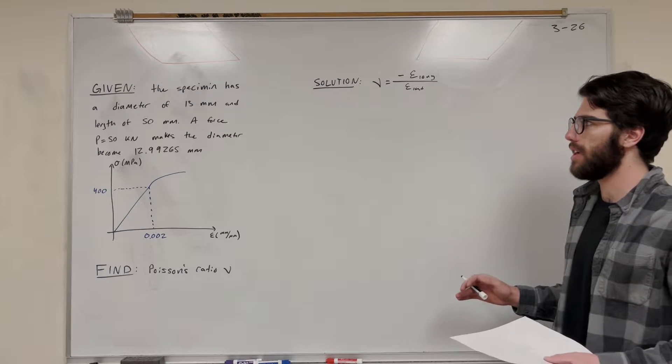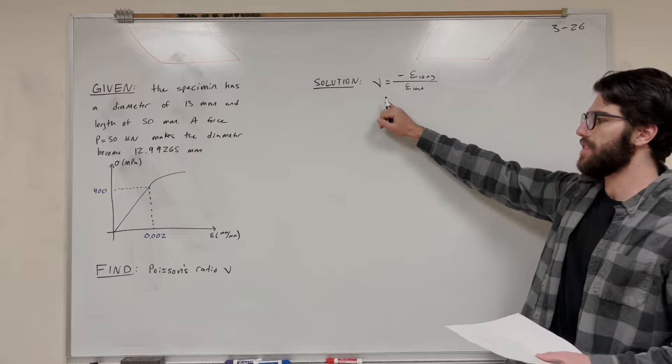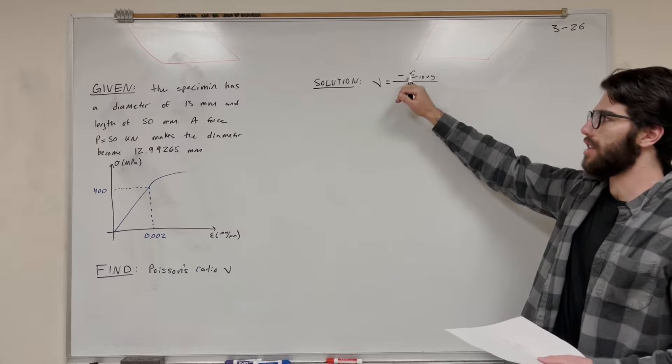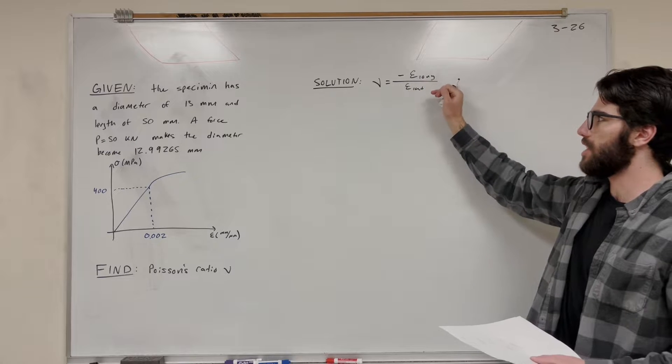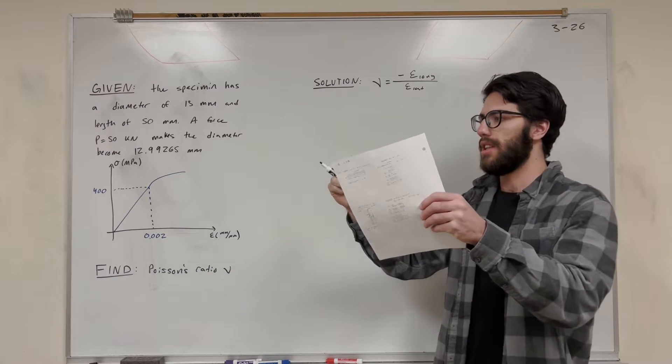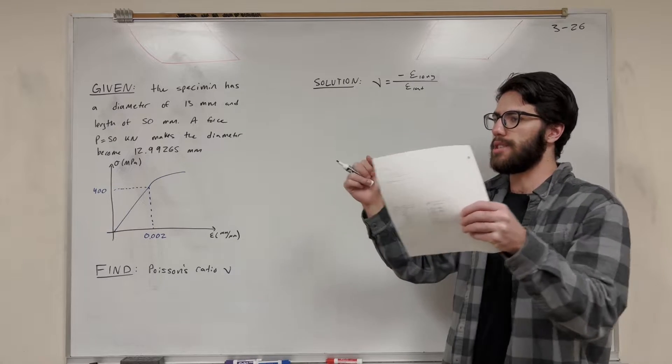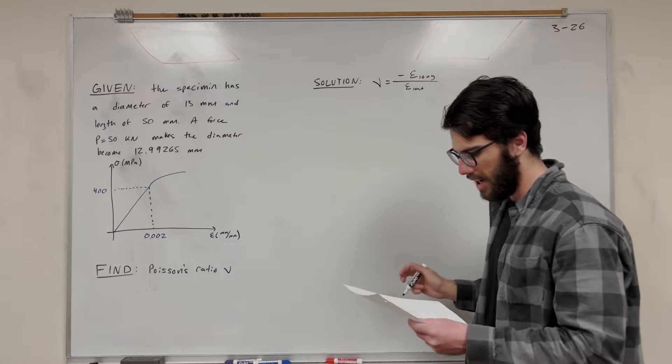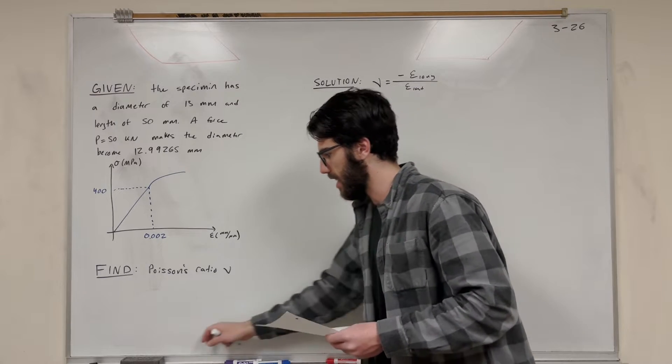So let's just get started with it. So our equation for Poisson's ratio is Poisson's ratio is equal to the strain in the long direction over the strain in the lateral direction. So that means if you have a specimen, the strain in the long direction is how much it expands or contracts in the long direction. Whereas, I did it backwards, right? This is the lateral versus long.